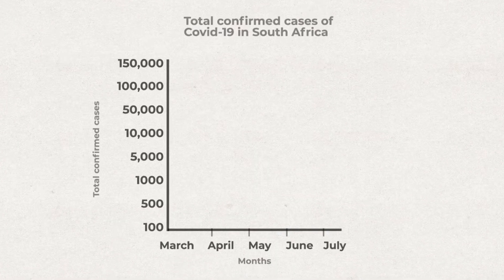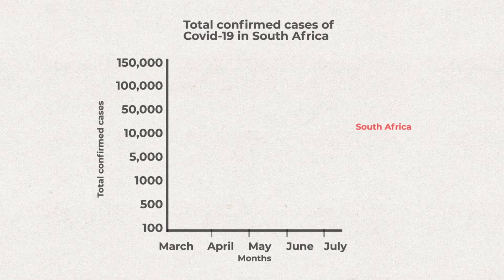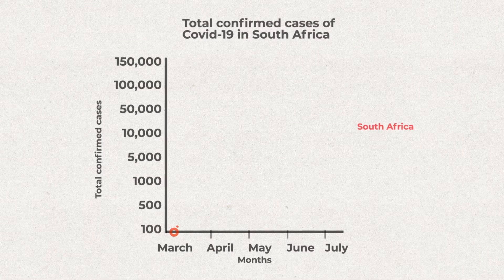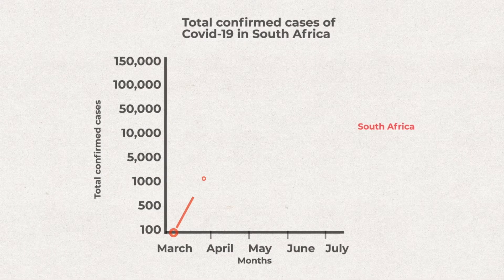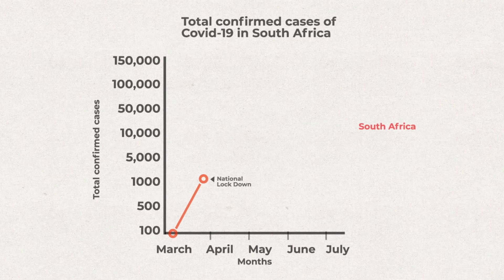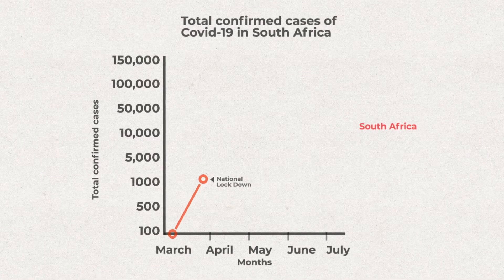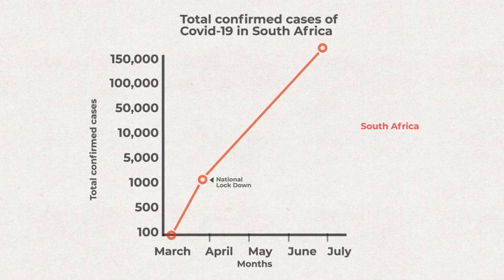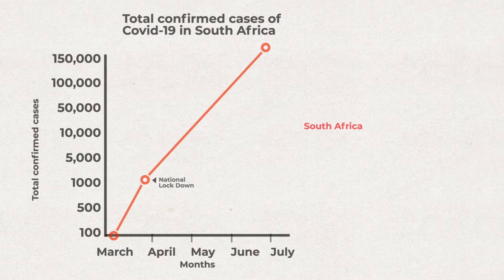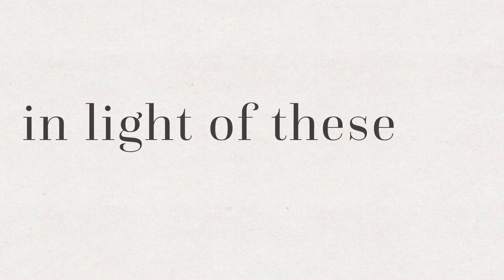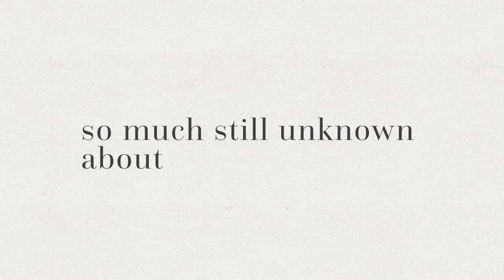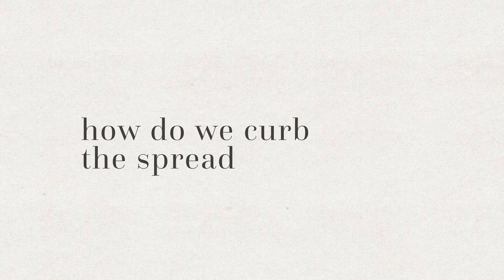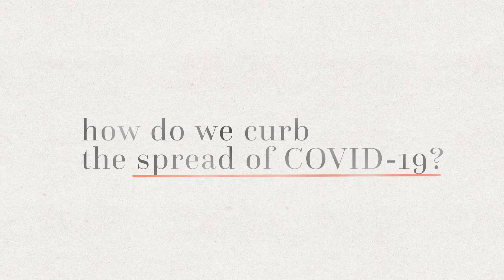South Africa recorded its first case of COVID-19 on the 5th of March 2020. By the time a national lockdown had been declared on the 27th of March, this number had already grown to 1,170. Despite the social distancing this lockdown enforced, infections continued to spread, reaching 150,000 by the end of June. In light of these ever-increasing numbers, and with so much still unknown about the disease, the most important question is, how do we curb the spread of COVID-19 and prevent future outbreaks?